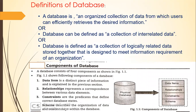An object has some properties and functionalities corresponding to it — that is what data items represent. The next component is relationship, which represents a correspondence between various data elements. For example, a student is one data element or object, and the corresponding data elements include the student's name, roll number, and other attributes. A college is another data element or object.